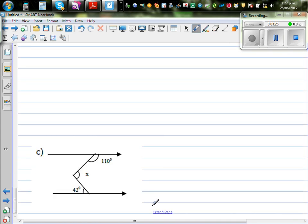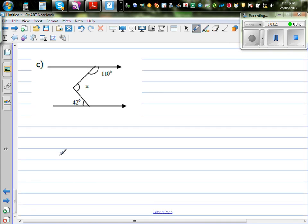This is X, this is 42, and this is 110. So what can we do? Again, these are parallel lines. So what can we see?